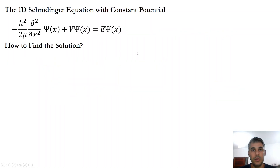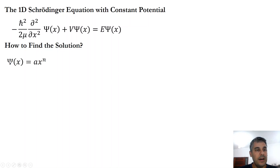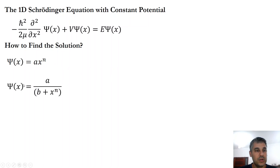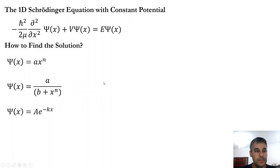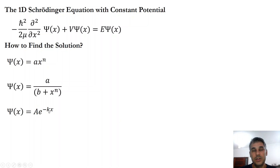To solve the Schrödinger equation, we are going to test a few functions without assuming many things beforehand. We can try a polynomial type function: a constant a times x to the power of n. We can also try a rational type function where we have x to the power of n in the denominator. We can try a decreasing exponential function: a constant a times the exponential of minus k times x, where k is another constant.